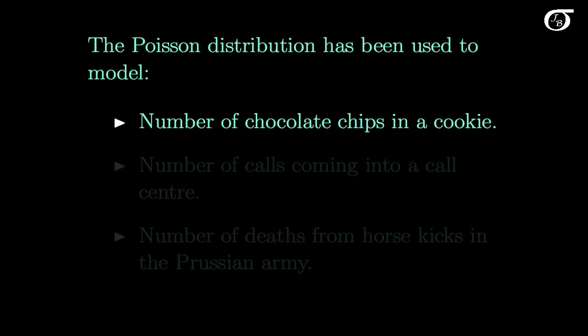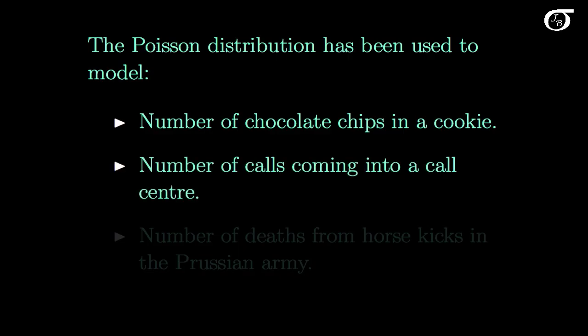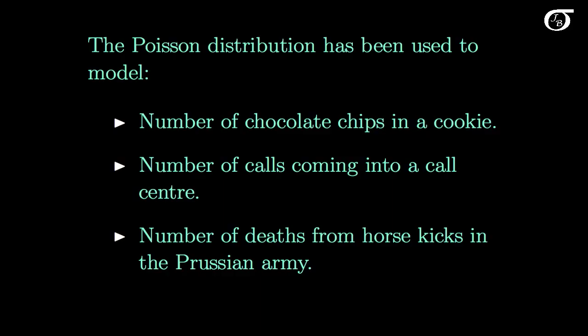The Poisson distribution has been used to model many things. For instance, the number of chocolate chips in a cookie — if we mix the dough really well, chocolate chips will be randomly scattered, so the count should approximately follow a Poisson distribution. Also the number of calls coming into a call center, though this can be dubious — for example, a 911 call center after an explosion gets a burst of calls. A classic statistics example is using it to model the number of deaths from horse kicks in the Prussian army, which would reasonably approximate events occurring randomly and independently.